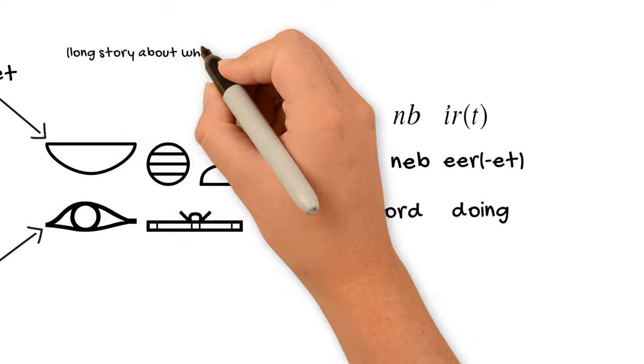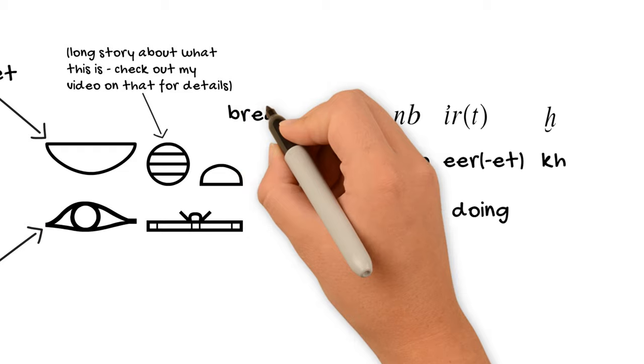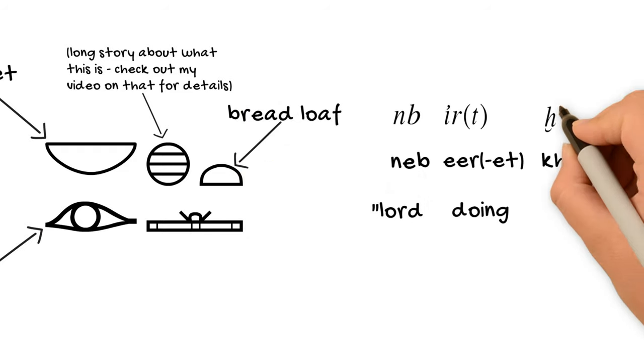But what about the third word here and how do they work all together? So the round sign is what we call a third H, that's a ha sound. And the half circle one is a picture of a bread loaf, which is the sound for the letter T.